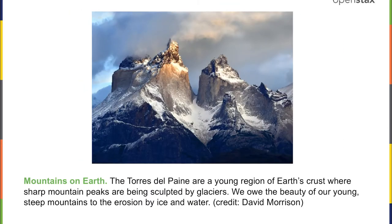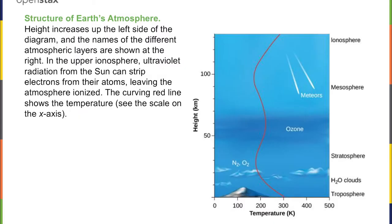Mountains on Earth are largely created when two continental plates crash into each other, ripple and push together creating mountains — some of which have not had much time to erode and still have very steep cliffs. And now let's look at the atmosphere — number three of the big three.